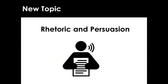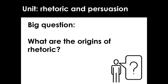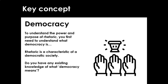So on to our new topic. We're learning all about rhetoric and persuasion over the next few weeks. We need to start with the question: what is rhetoric, and where did it begin — what are the origins of rhetoric? The first thing we need to recap is the concept of democracy. To understand the idea of power and the purpose of rhetoric, we first need to explore what democracy is. Rhetoric is a characteristic of a democratic society. Discuss with a partner — do you have any existing knowledge of what democracy means? Pause the video and turn and talk to a partner.